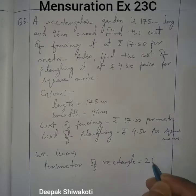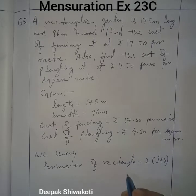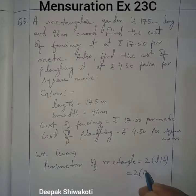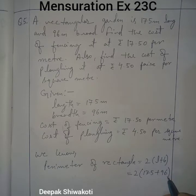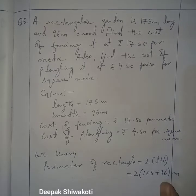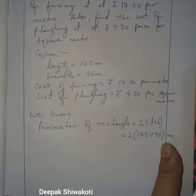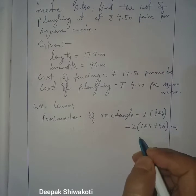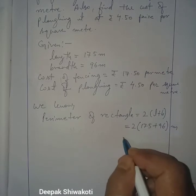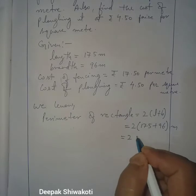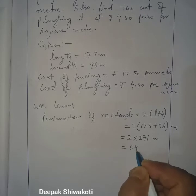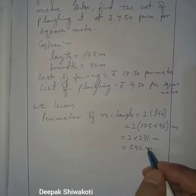Perimeter of rectangle equals 2 into length plus breadth, which equals 2 into 175 plus 96 meter. Adding gives 271 meter and multiplying by 2 gives 542 meter. So the perimeter, which is the total length to be fenced, is 542 meter.